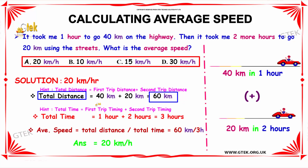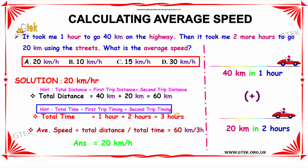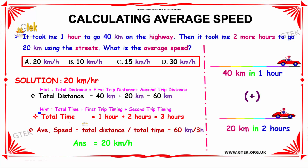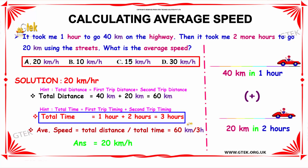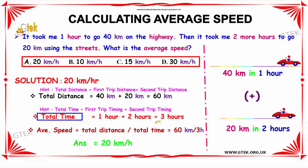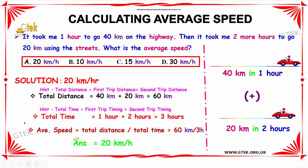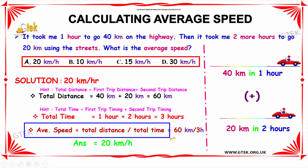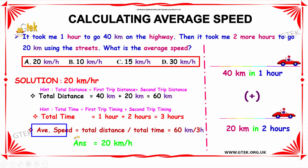The total time equals the first trip time plus the second trip time, which is 1 hour plus 2 hours, equal to 3 hours. Therefore, the total time is 3 hours. So the average speed equals total distance divided by total time. Substituting the known values, we get: average speed equals 60 km divided by 3 hours.